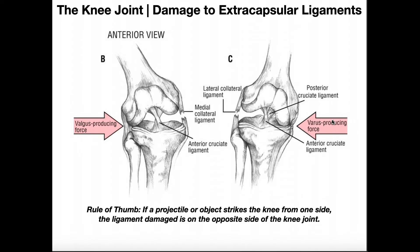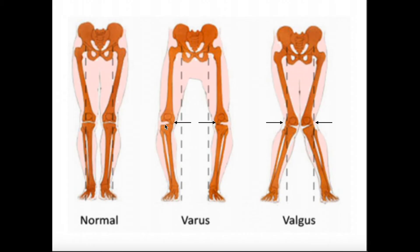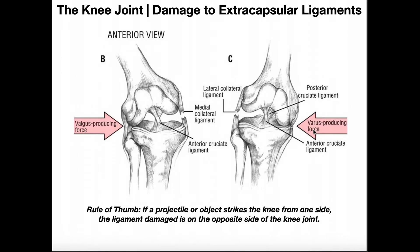In contrast, a varus-producing force is one that's actually hitting the knee on the medial side. A varus-producing force tends to cause the knees to bow out. So which ligament is put on slack and which is put in tension? Even though you're hitting the MCL, it's actually being put in laxity. The LCL is being stretched. So in the case of a varus-producing force — one hitting the medial side of the knee — it's going to cause the LCL to be tensed and stretched, and if it's enough, it tears. A valgus-producing force is a lateral force that damages the MCL; a varus-producing force is a medial force that damages the LCL.